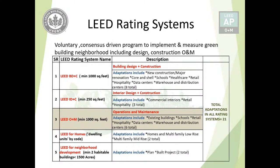We know about the rating systems. We have a voluntary consensus-based program to implement and measure green building, including design, construction, operations, and maintenance. We have five rating systems: BD+C, ID+C (interior design and construction), O+M (operations and maintenance), LEED for Homes, and LEED for Neighborhood Development.